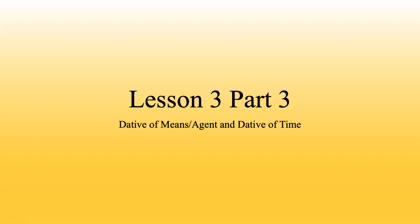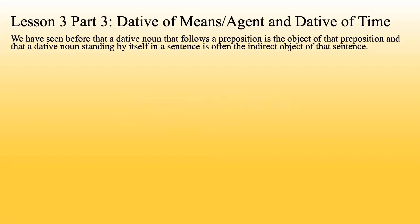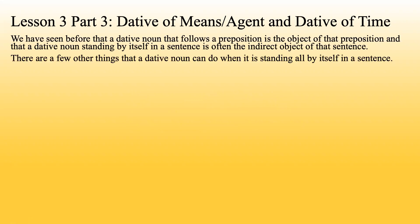Lesson 3, Part 3: Dative of Means or Agent and Dative of Time. We have seen before that a dative noun that follows a preposition is the object of that preposition, and that a dative noun standing by itself in a sentence is often the indirect object of that sentence. There are a few other things that a dative noun can do when it is standing all by itself in a sentence.